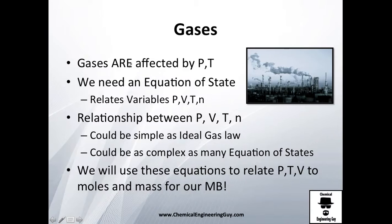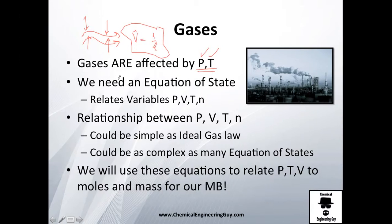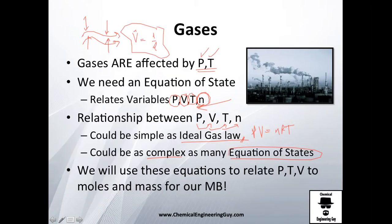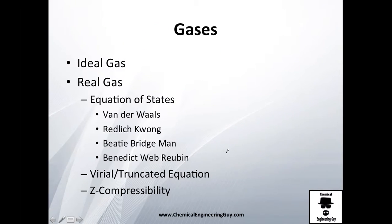So why model gases? Gases are essentially affected by pressure and temperature changes. A liquid, when you change the pressure or temperature, doesn't change volume or density that much. But if you are modeling a gas, pressure and temperature will definitely affect these equations significantly. We need an equation to relate the variables of pressure, volume, temperature, and amount of substance — also known as moles. This is a relationship between these four parameters, and we could model it as simply as the ideal gas law using PV = nRT, or it could be as complex as equations like the Benedict-Webb-Rubin or Beattie-Bridgman.